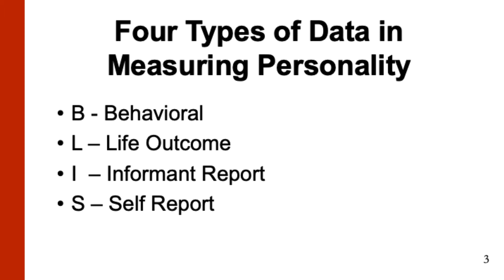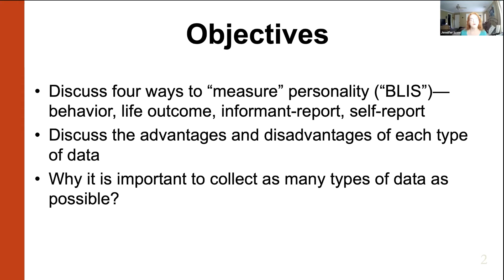The BLIS data types are: B for behavioral data, L for life outcome data, I for informant report data, and S for self-report. Those probably sound fairly familiar to you, except maybe the life outcome — that's kind of a newer term. I will talk about each of those in detail, including the advantages and disadvantages of each.